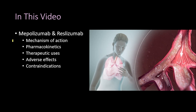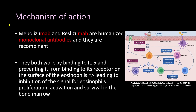Continuing our discussion about therapy for asthma, in this video we will talk about mepolizumab and reslizumab. Both of these medications are targeted therapies for asthma. With targeted therapies there are much fewer side effects, but they are more expensive. We will talk about their mechanism of action, pharmacokinetics, therapeutic uses, adverse effects, and contraindications.